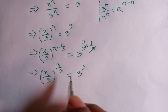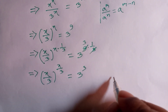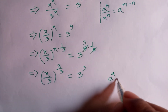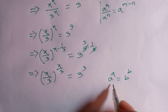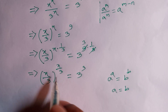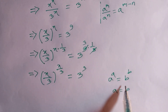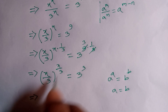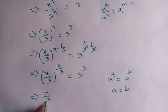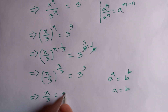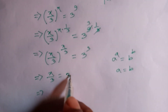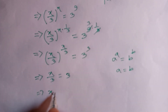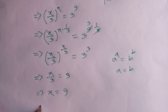So x to the power x divided by 3 is equal to 3 to the power 3. If we look here, when a to the power a equals b to the power b, we can write a equals b. Comparing both sides, we can write x divided by 3 is equal to 3. Taking 3 to the right side, x is equal to 3 times 3, which is 9. So x is equal to 9.